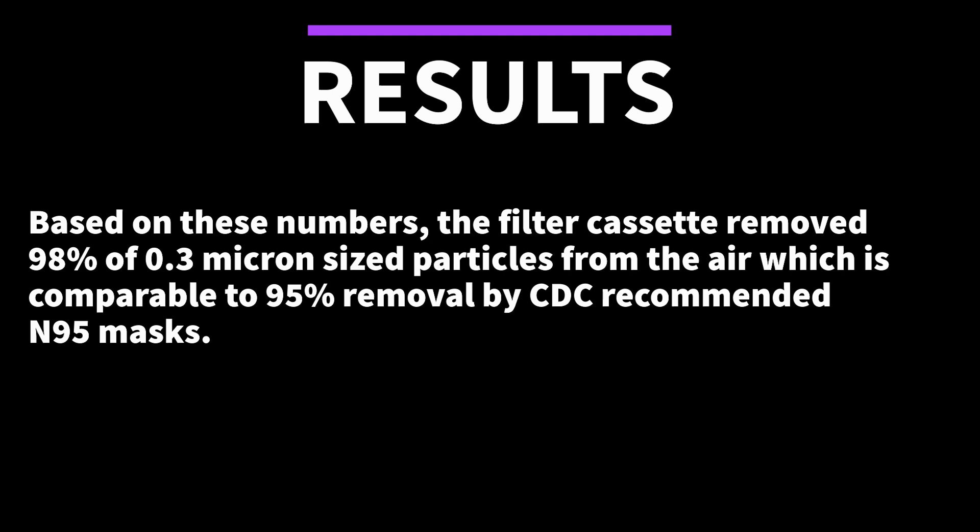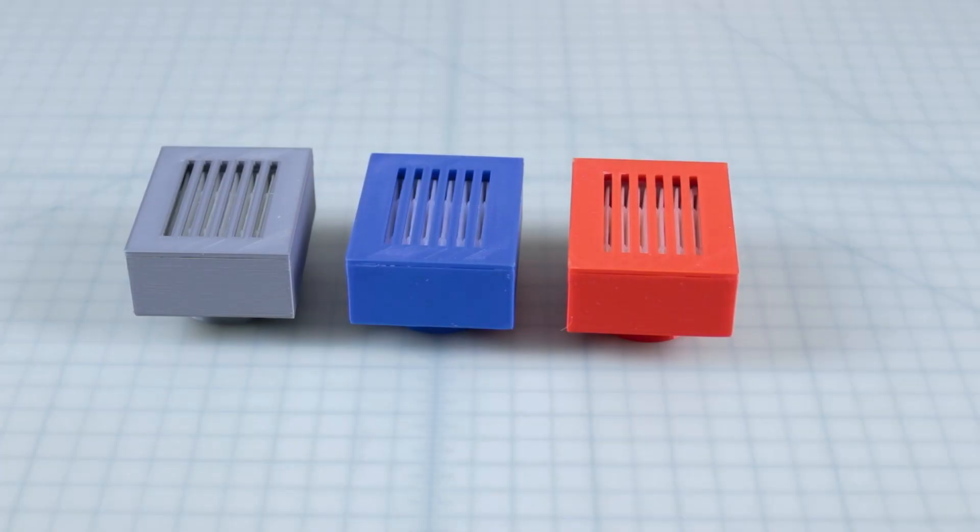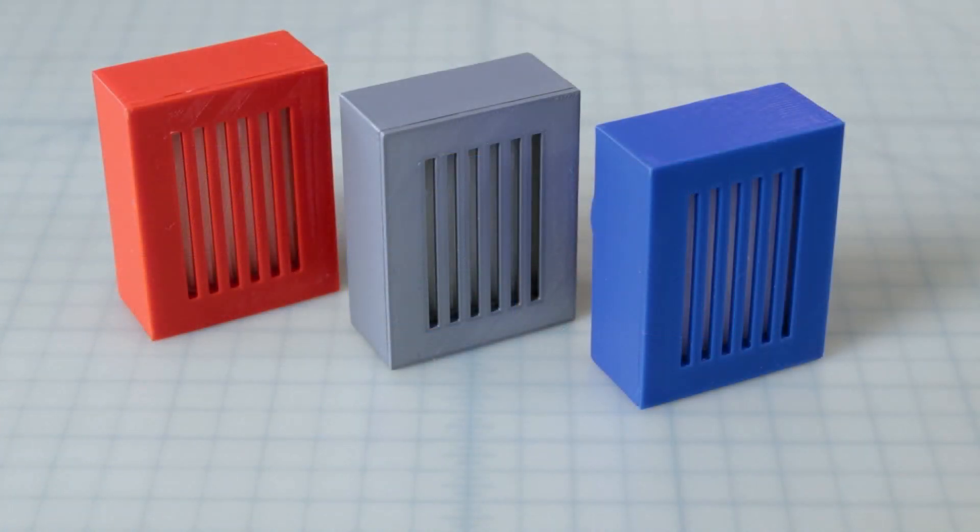Based on these numbers, the filter cassette removed 98% of 0.3 micron sized particles from the air, which is comparable to 95% removal by CDC recommended N95 masks. So within the confines of this test, the difference in particles between an empty filter cassette and a finished product is 98%. Although I will still rely on FDA approved PPE, this data at the very least shows that as an emergency backup, this filter could have some usefulness.